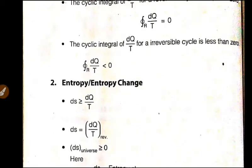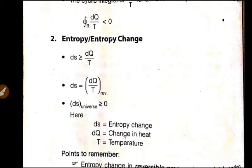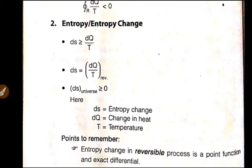So next is entropy change. Entropy change, Ds greater than DQ by T. This is the reversible cycle. Ds is equal to DQ by T reversible.